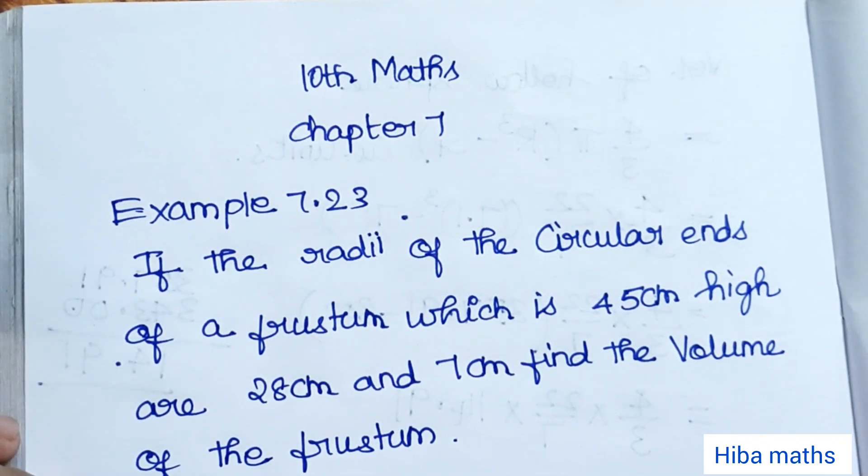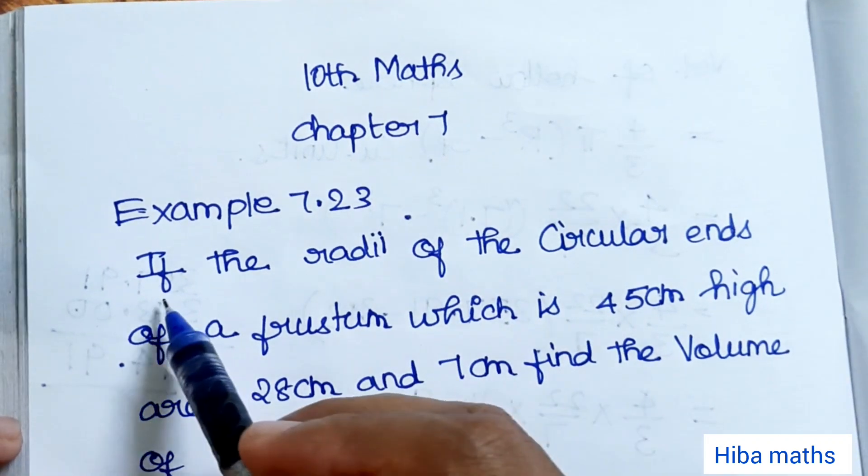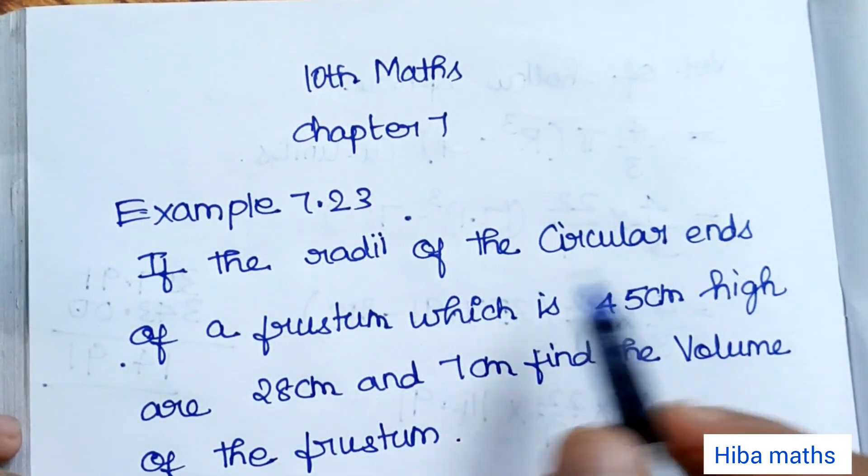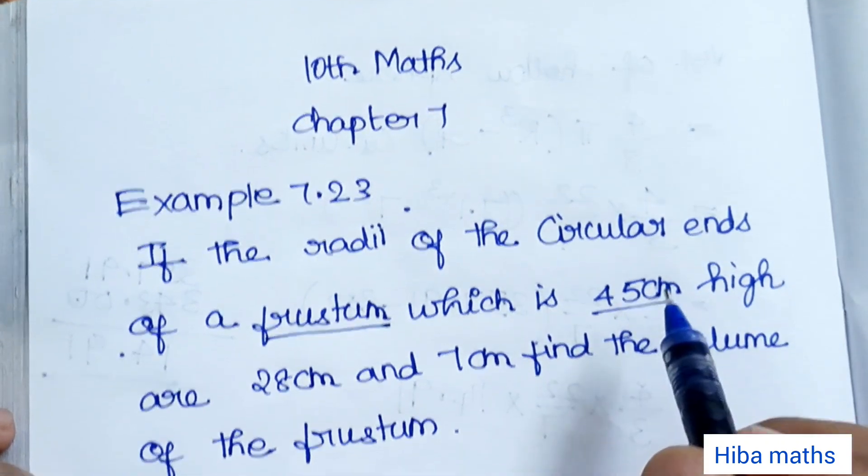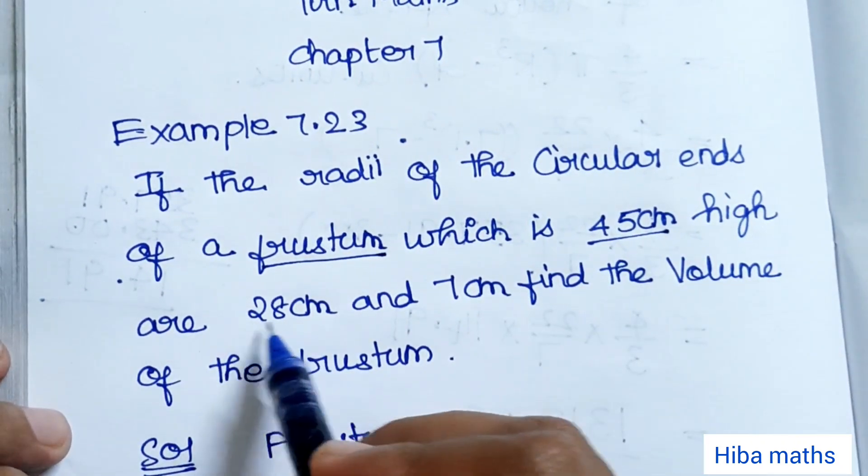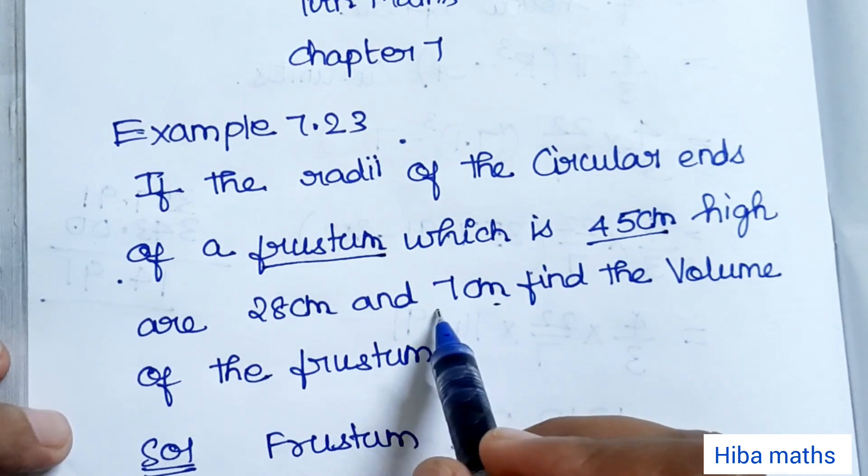Hello students, welcome to Hiba Maths, 10th Standard Maths, Chapter 7, Example 7.23. If the radius of the circular ends of a frustum which is 45 cm high, the height is 45 cm, are 28 cm and 7 cm.